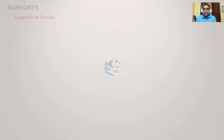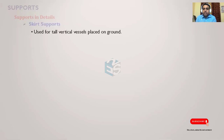Starting with skirt support: these are usually used for very tall columns where the H/D ratio is very high — 10, 15, 20, or more than 6 or 7. When such vessels are present, these vertical vessels will be placed upon a skirt and mounted on the ground.